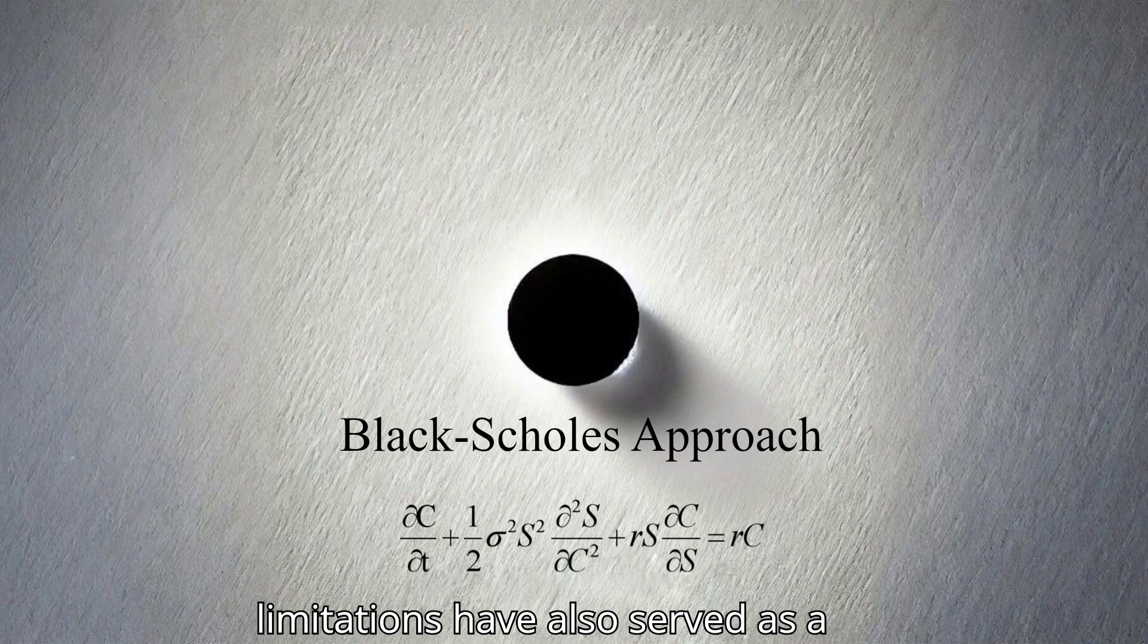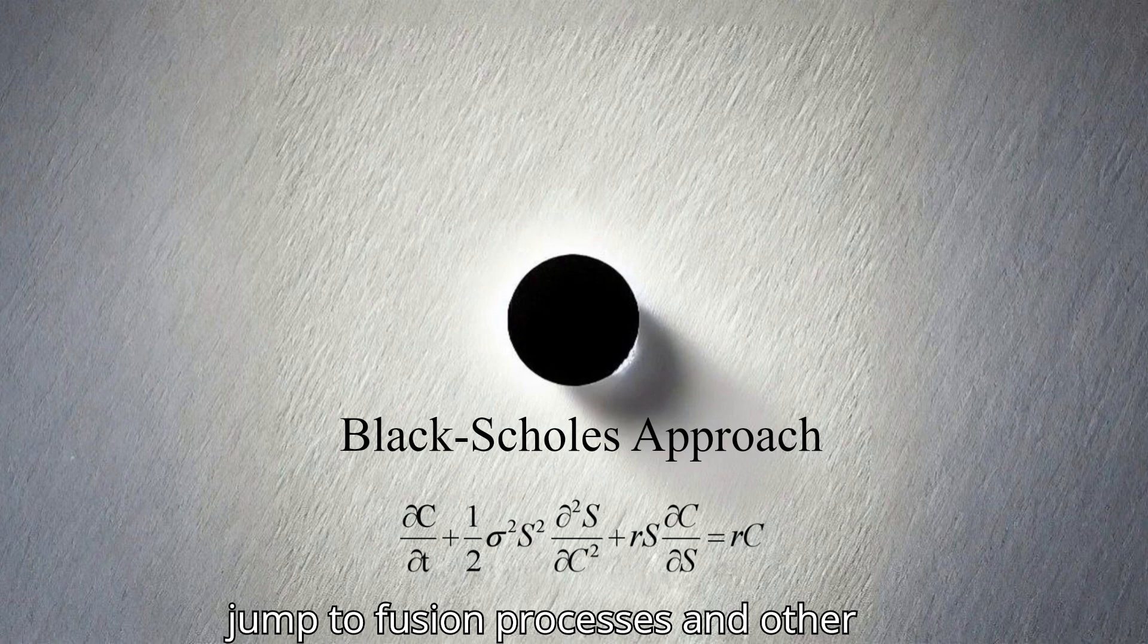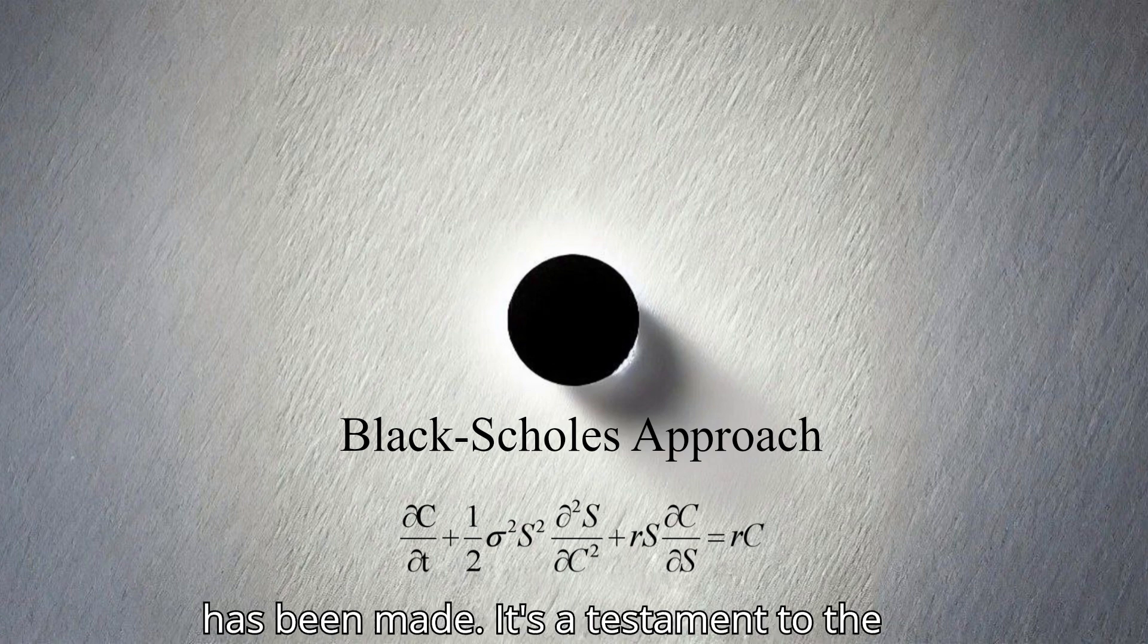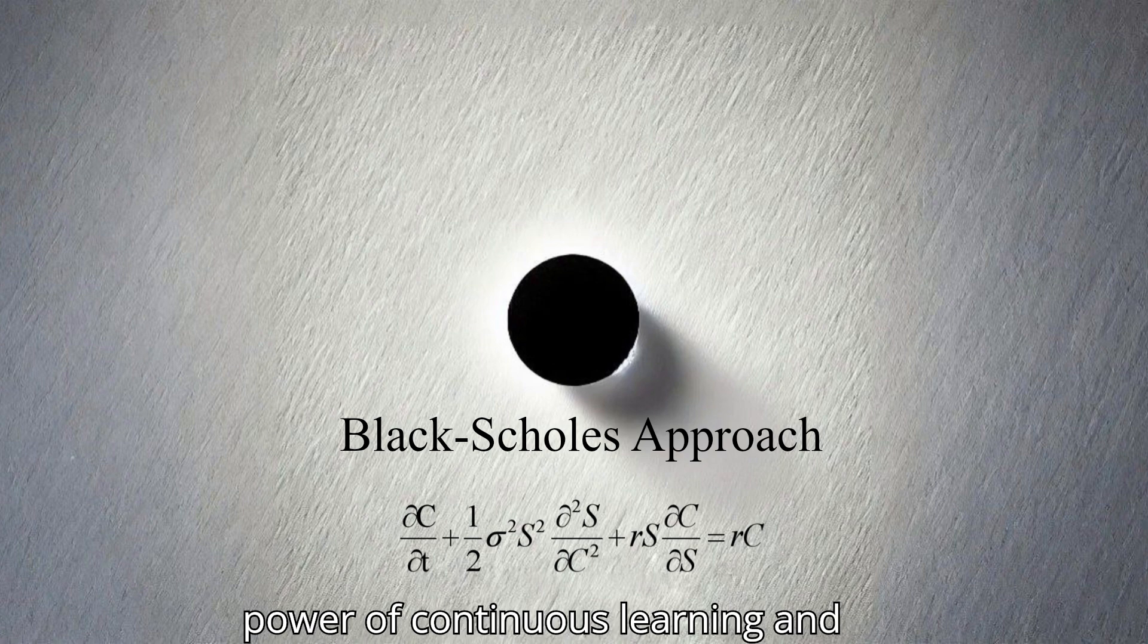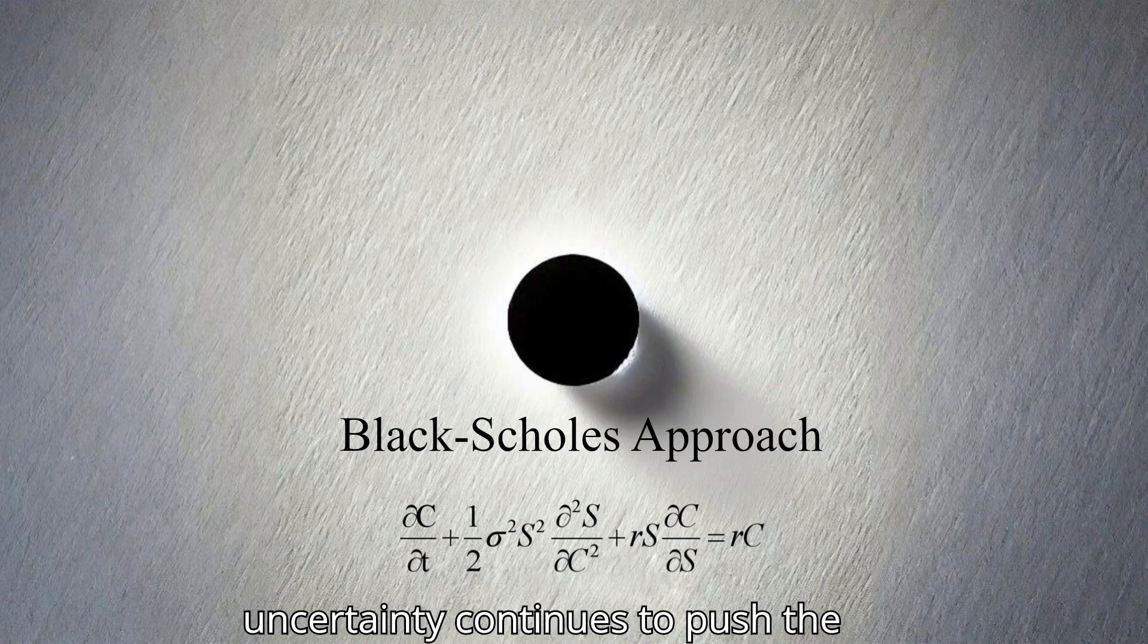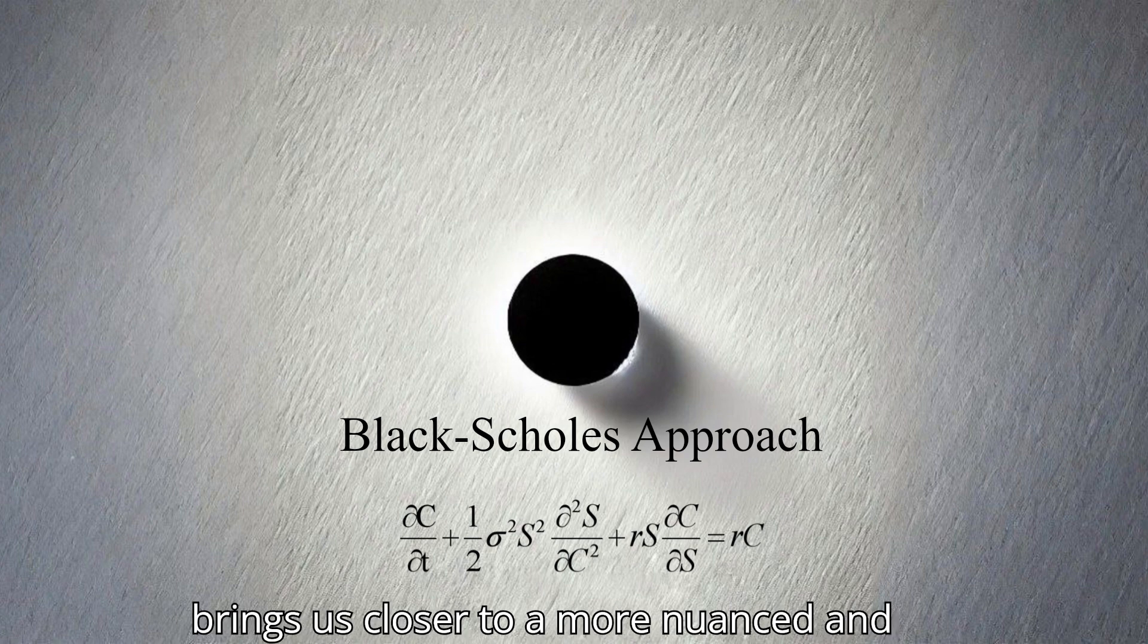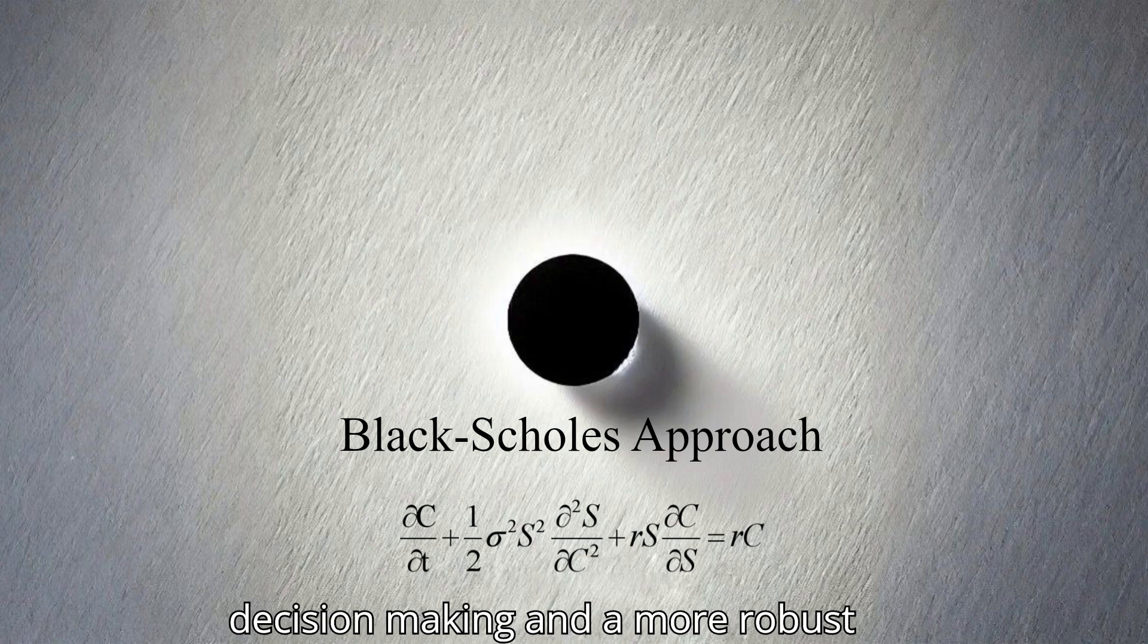However, the model's limitations have also served as a catalyst for innovation, driving researchers to develop more sophisticated models that incorporate stochastic volatility, jump diffusion processes, and other refinements that better reflect the complexities of real-world financial markets. It's amazing how much progress has been made. It's a testament to the power of continuous learning and refinement. Black, Scholes, and Merton provided a foundational framework, but the quest for a more complete understanding of risk and uncertainty continues to push the boundaries of financial modeling. And that's what makes this field so dynamic and exciting. Each new discovery, each refinement to existing models, brings us closer to a more nuanced and accurate understanding of financial markets, ultimately leading to better decision-making and a more robust financial system.